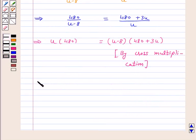Expanding the right side, 480u is equal to 480u plus 3u square minus 3840 minus 24u.